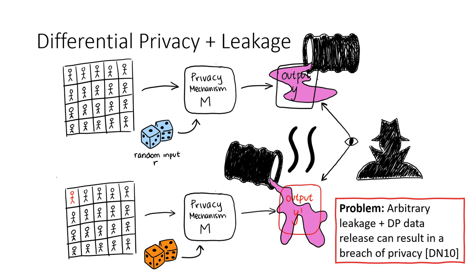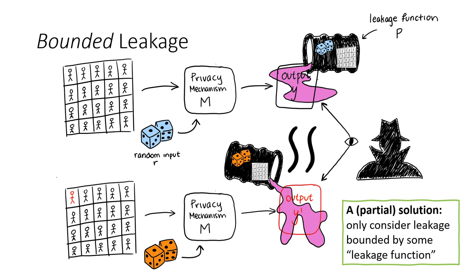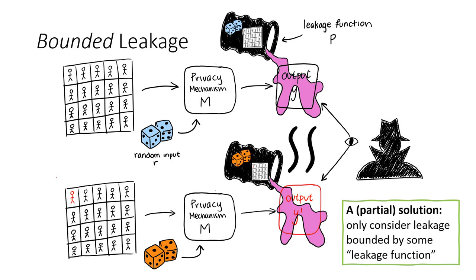However, even though privacy guarantees in the presence of arbitrary leakage is difficult, maybe we only care about privacy guarantees in the presence of certain leakage, such as the presence of exact counts in the case of the census. Moreover, it makes sense to only compare the outputs of mechanisms on two different databases assuming that the leakage was the same. This leads us to the concept of bounded leakage differential privacy.